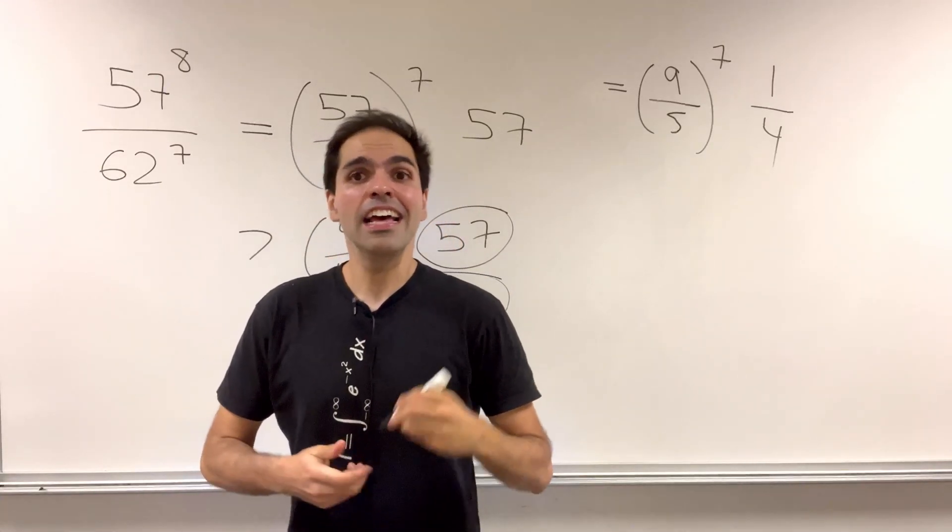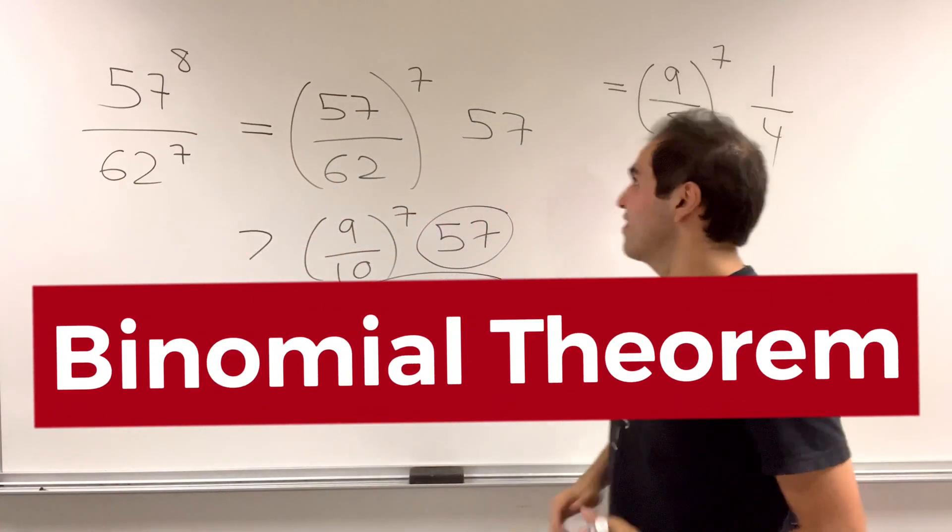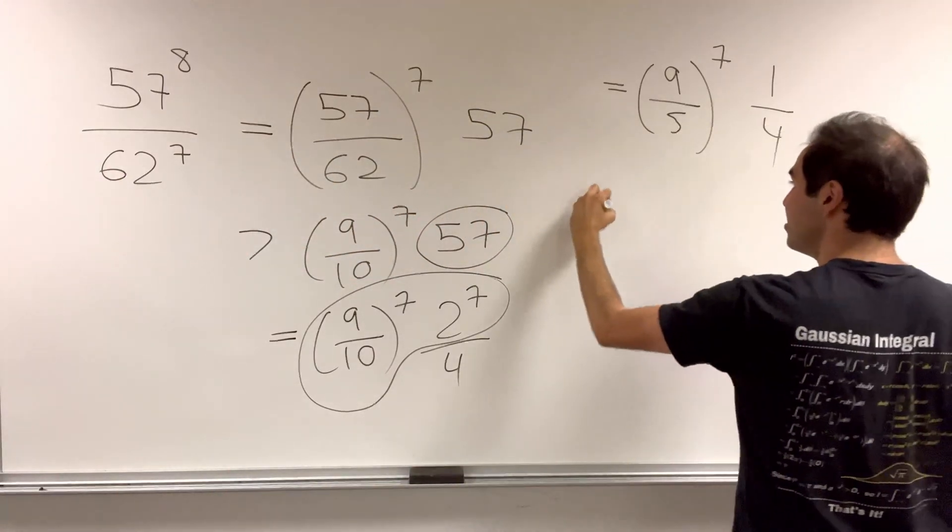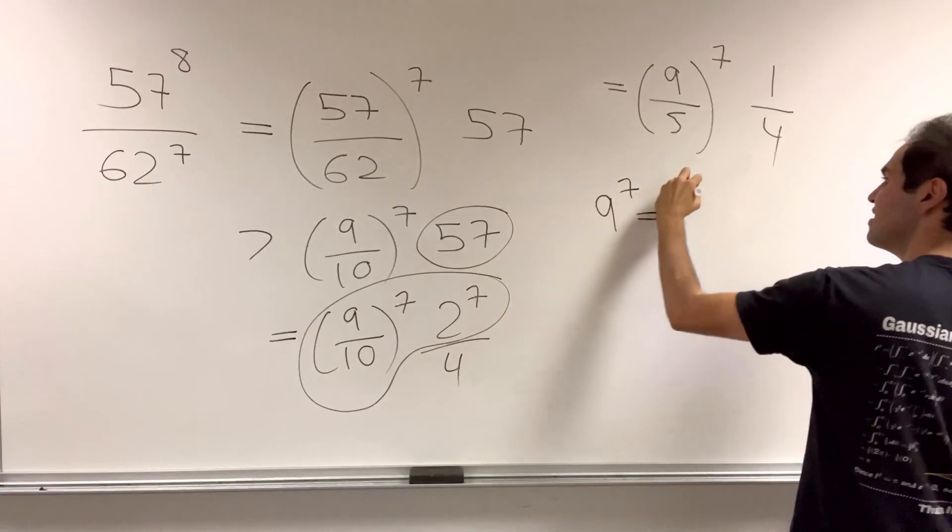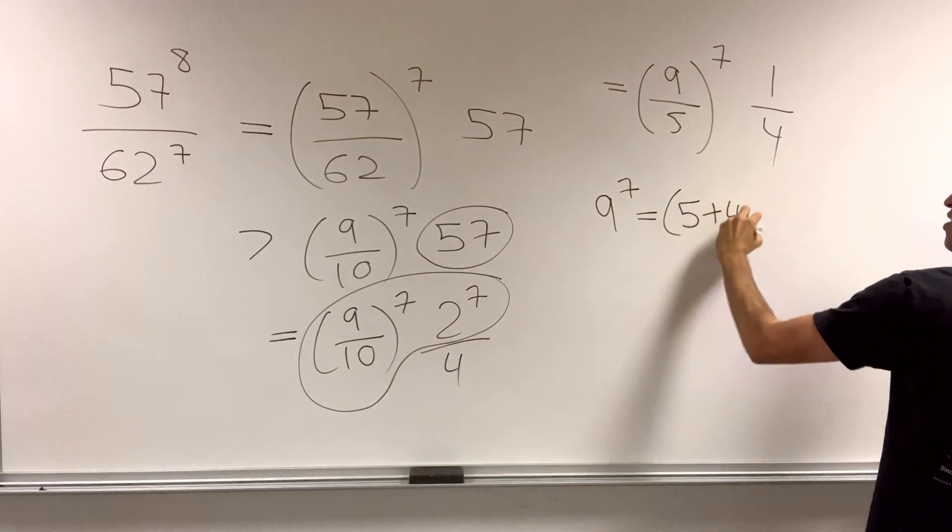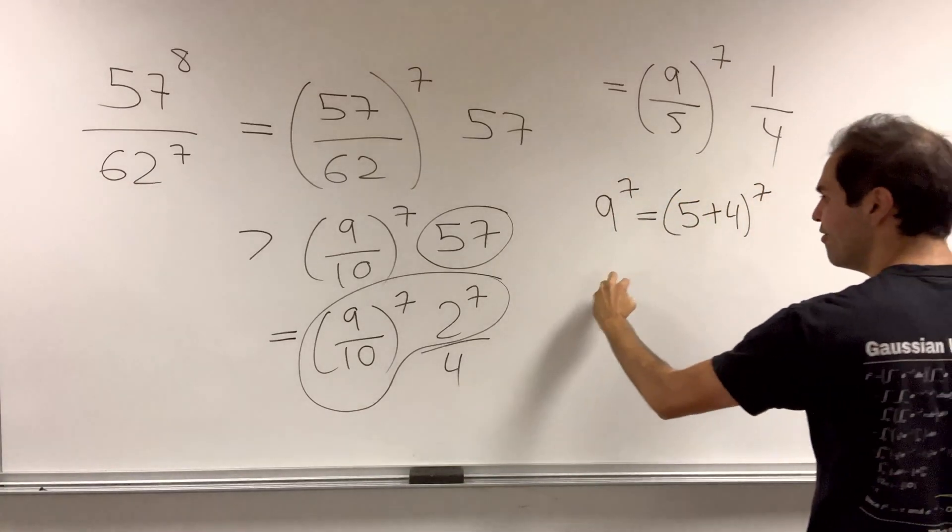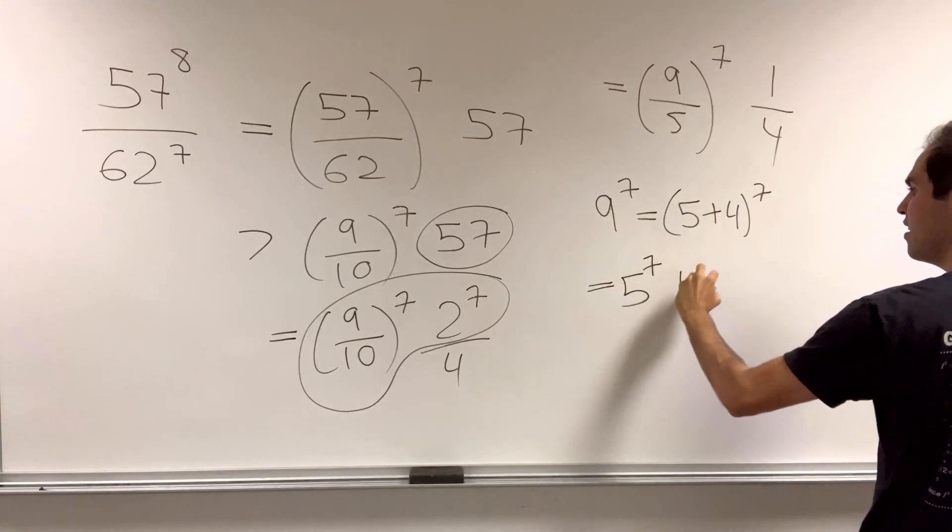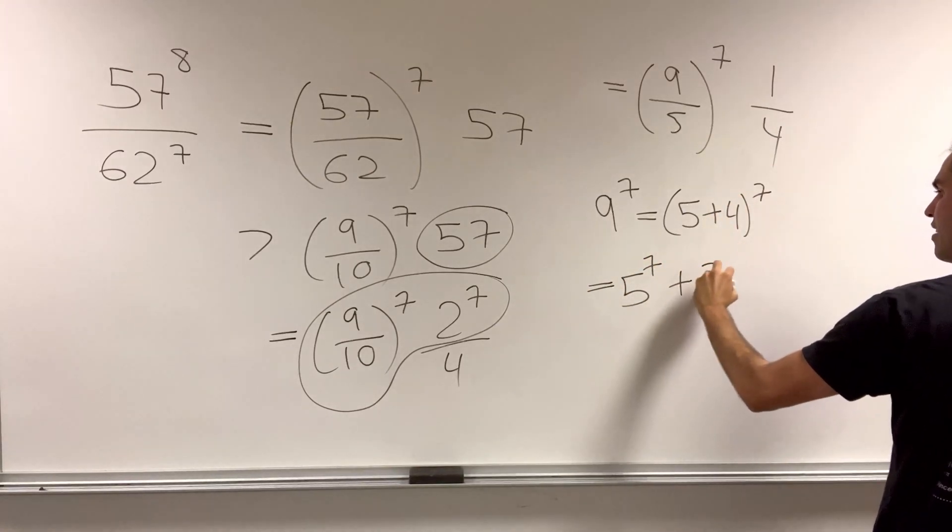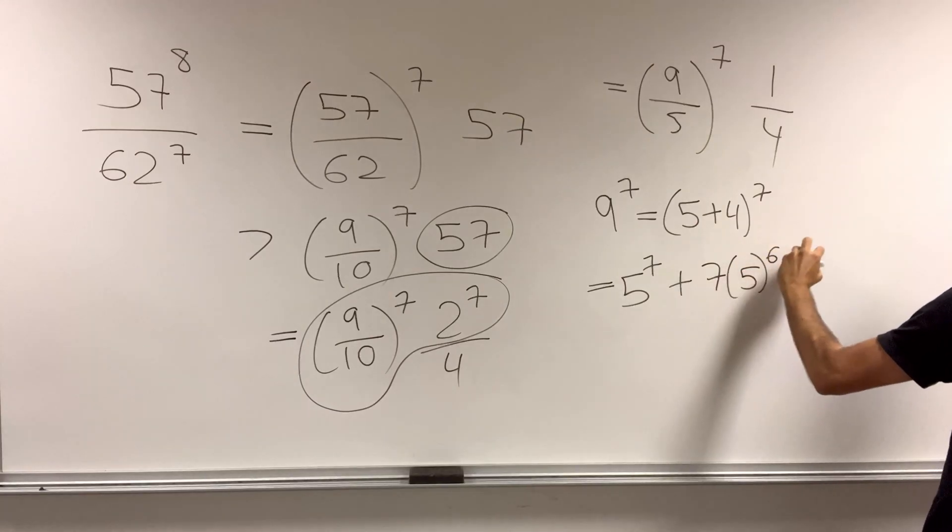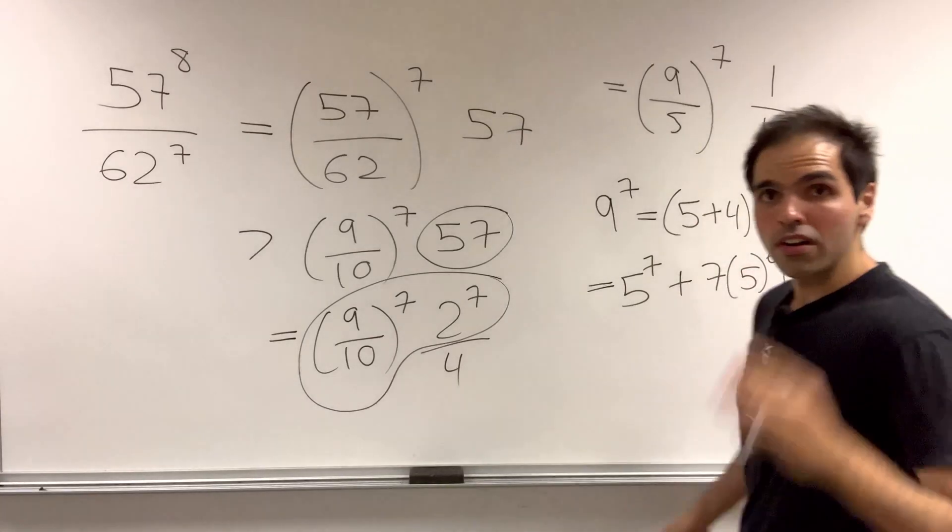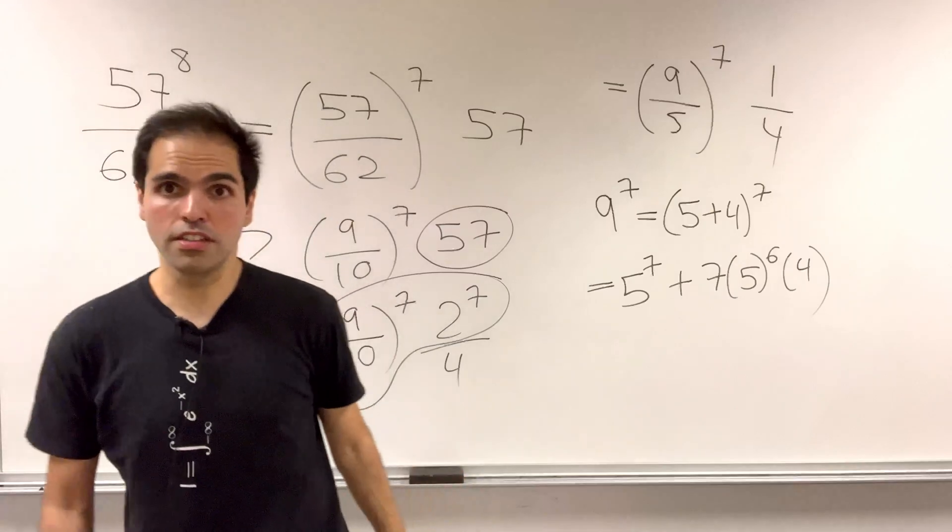Luckily, the thing that saves the day is the binomial theorem, because 9 to the 7th, that is the same thing as 5 plus 4 to the 7th, which becomes 5 to the 7th plus 7 times 5 to the 6th times 4, plus some positive junk terms.